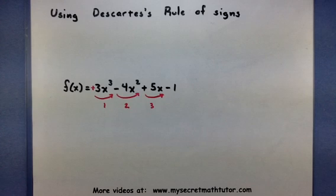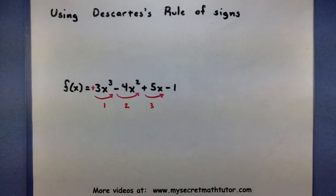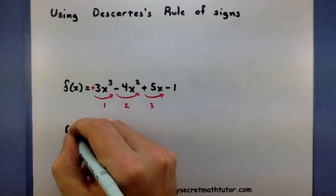Now according to Descartes' rule of sign, the number of possible positive zeros is equal to the number of sign changes, or actually less than that by an even number. So let me write that down.